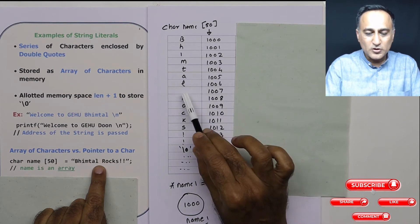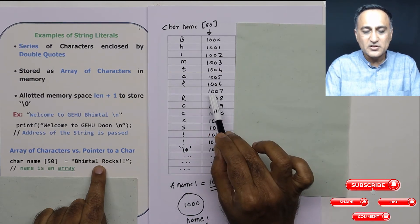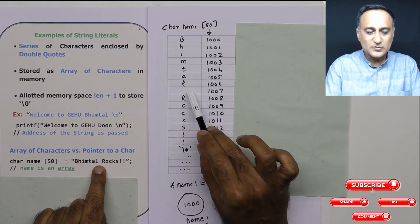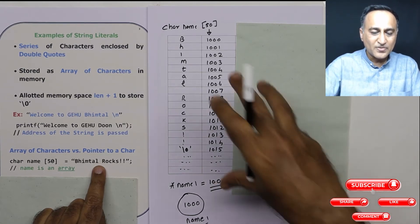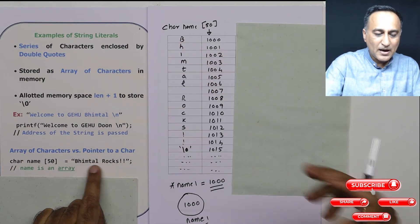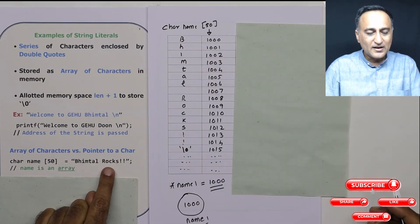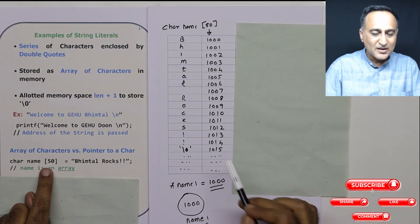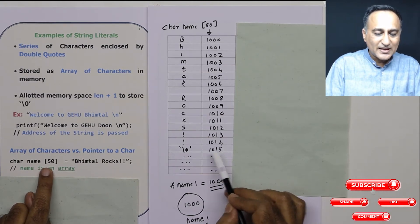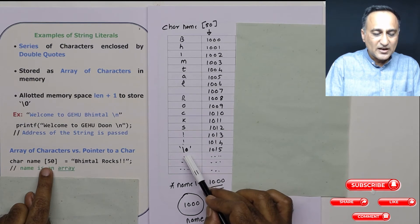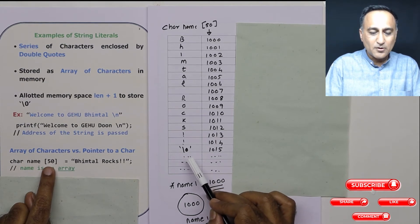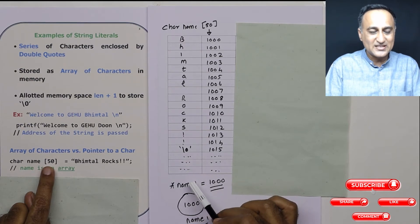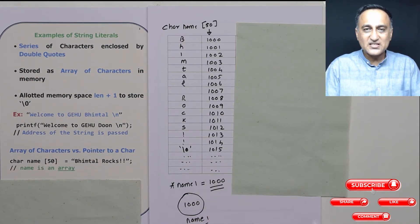You need to understand the space after l is also a character because space on the keyboard is also a special character. So the space is allocated memory which is 1007. At address 1007, this space is also allocated memory. This is how the memory map looks of "Bhimtal rocks" for this particular array of characters called name.